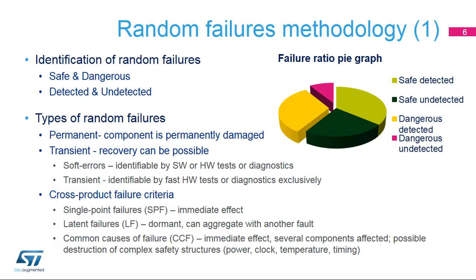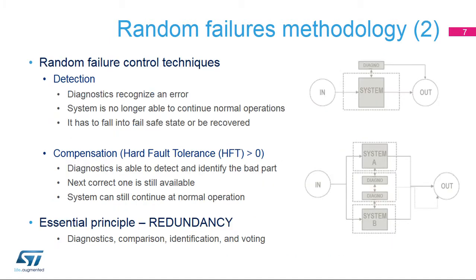Common causes of failure require a special focus, especially as they can potentially destroy even quite complex safety structures. When random failures are detected and cannot be compensated for, especially after a dangerous error is detected, the system has to be stopped and placed into a safe state, or go through a recovery process like reset, rollback, or a specific check function. Compensation methods usually allow the system to continue operating normally while using error correction, passivation, or masking functions.